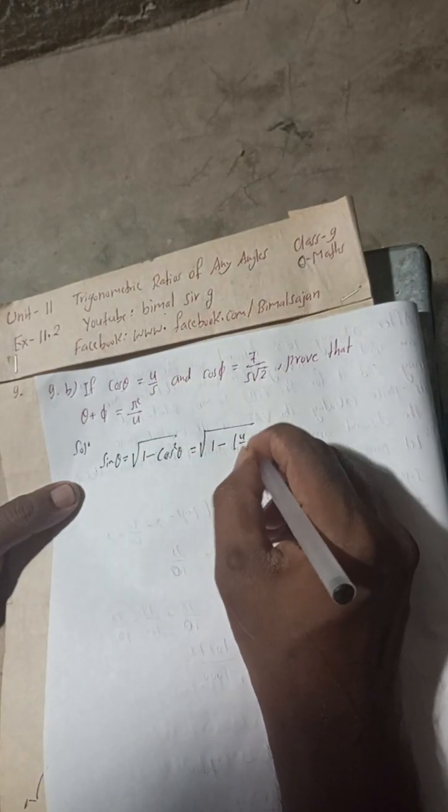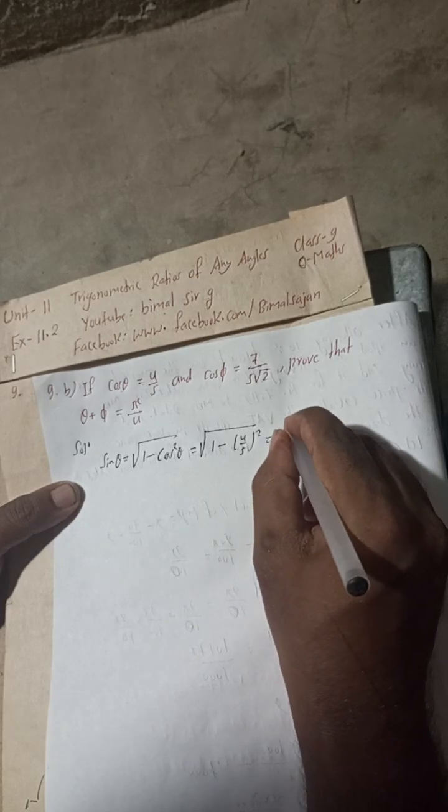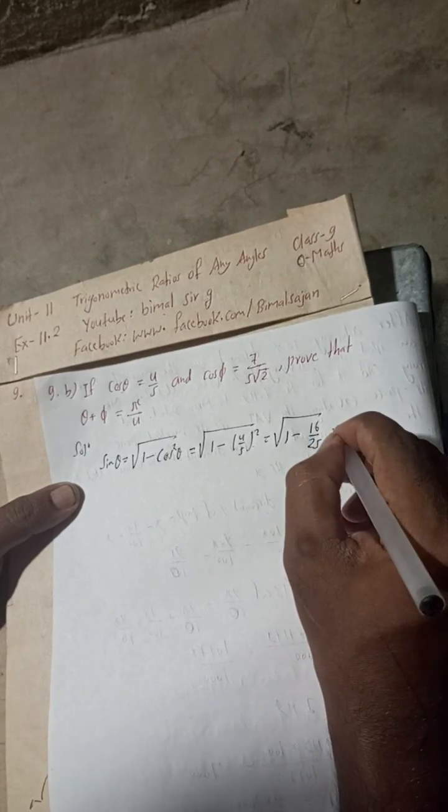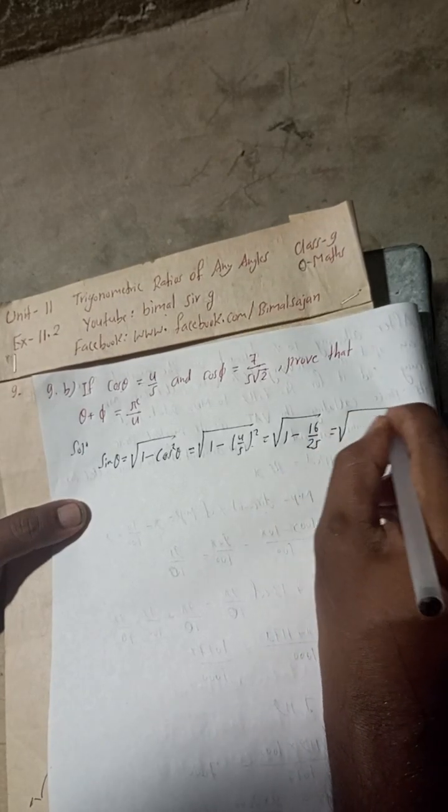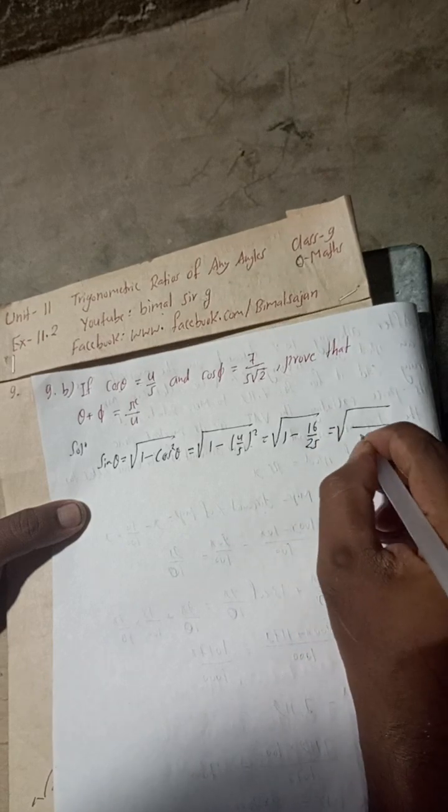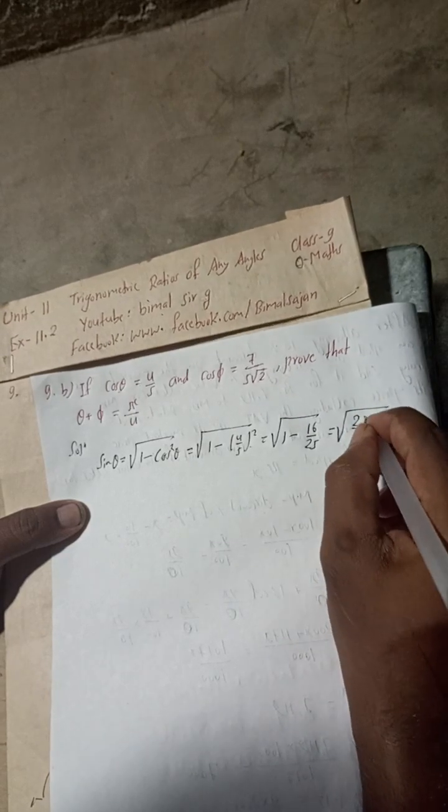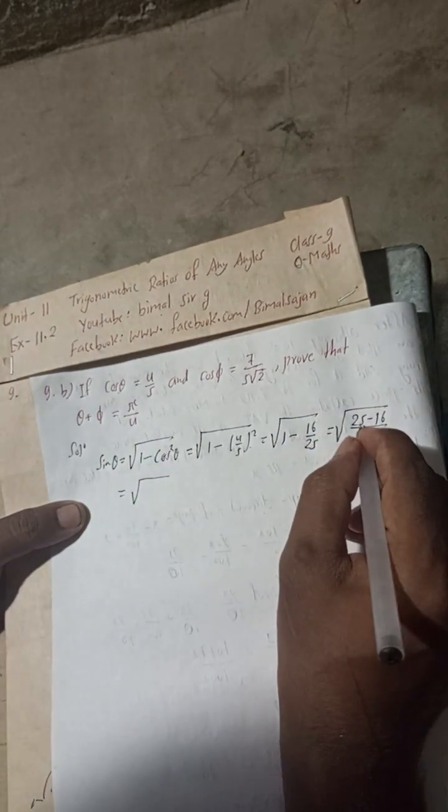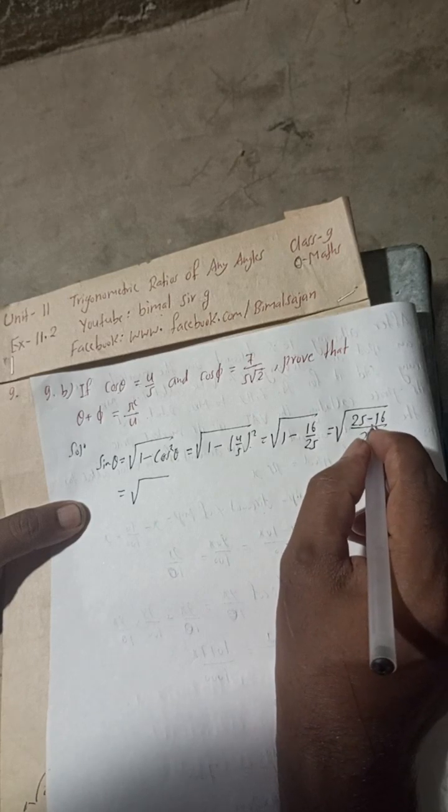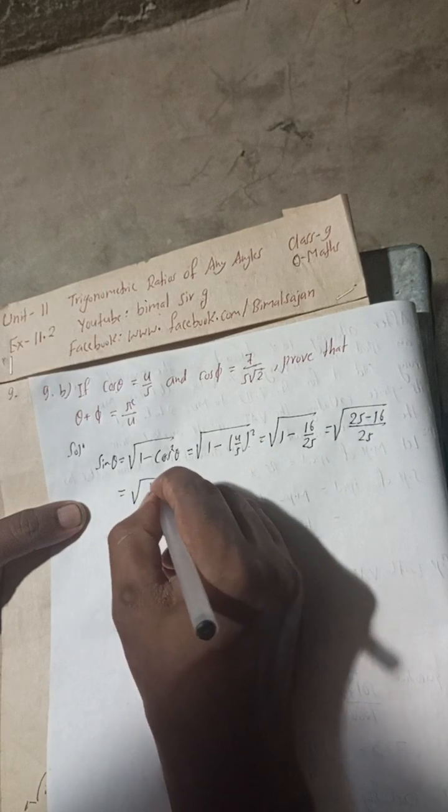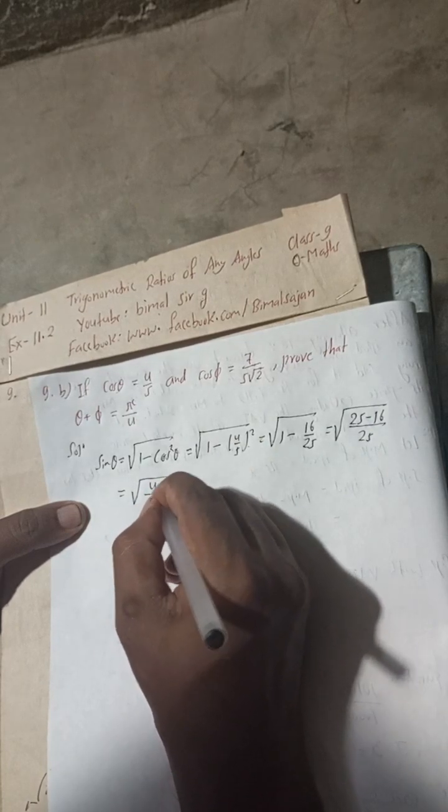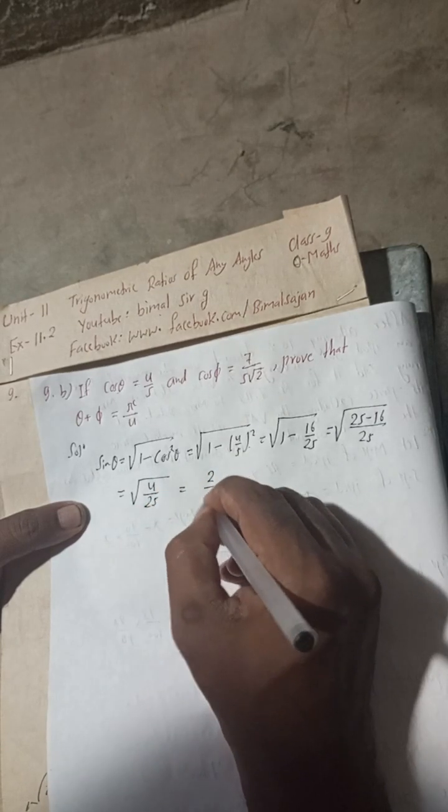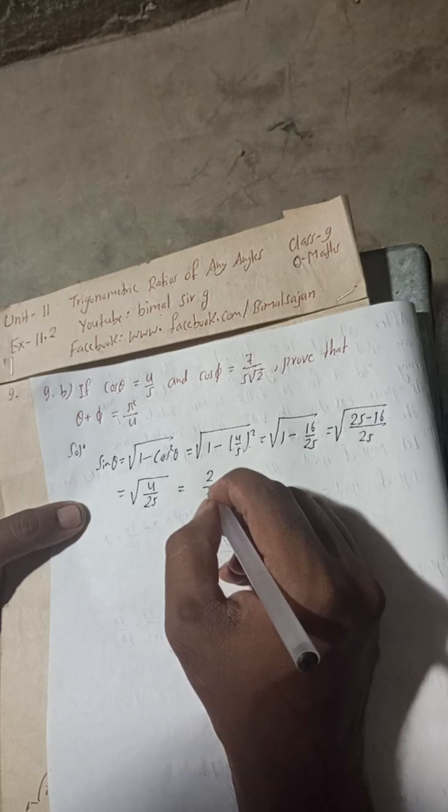This equals √(1 - 16/25) = √((25 - 16)/25) = √(9/25). The LCM is 25, so 25 - 16 = 9, giving us √(9/25).